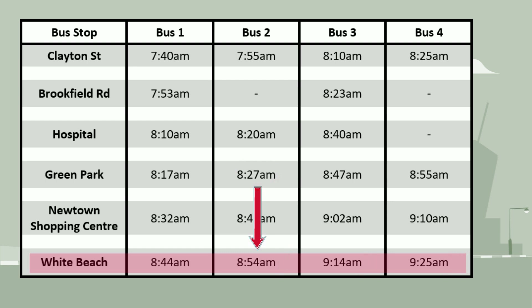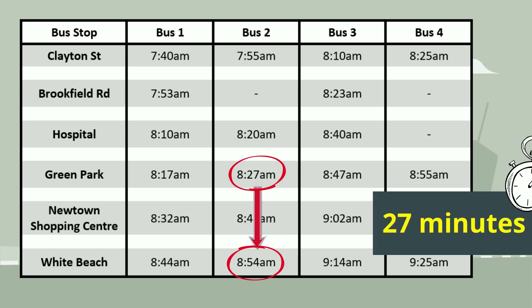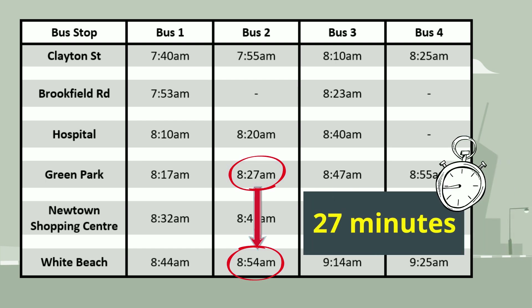We can also use a timetable to work out how long it is between stops. Let's work out how long the trip from Green Park to White Beach takes. We just need to work out how much time has elapsed between 8.27 a.m. and 8.54 a.m. The trip must take 27 minutes.